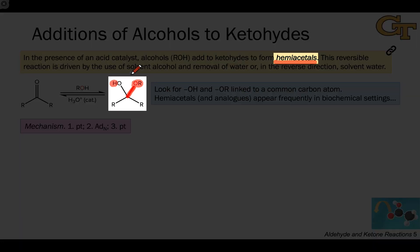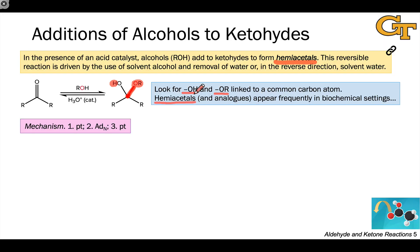This product on the right-hand side is a hemiacetal. The hallmark of a hemiacetal as a functional group has to do with the central carbon being linked to two oxygen atoms — specifically a hydroxyl group (an OH group) and an OR group. When the hydroxyl group is replaced with a second alkoxy group, that's an acetal, and we'll see acetals in the next video.